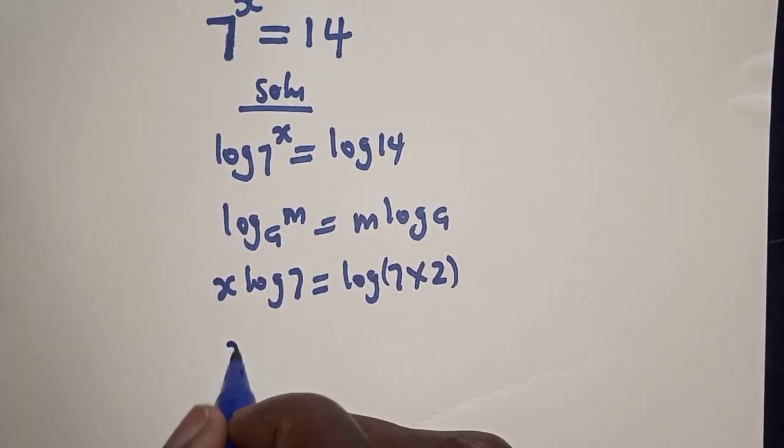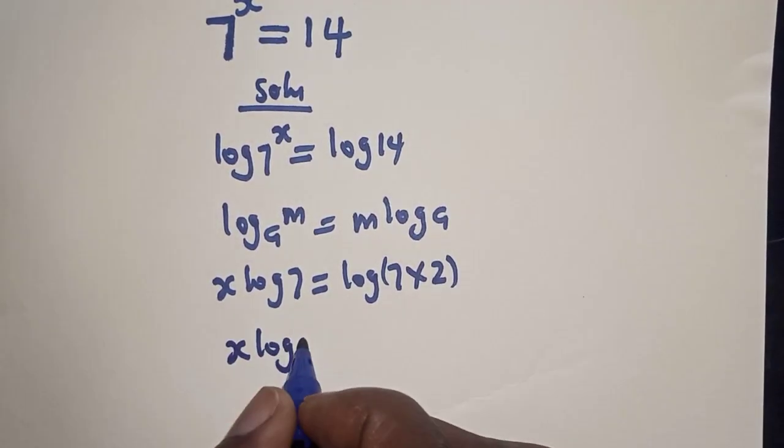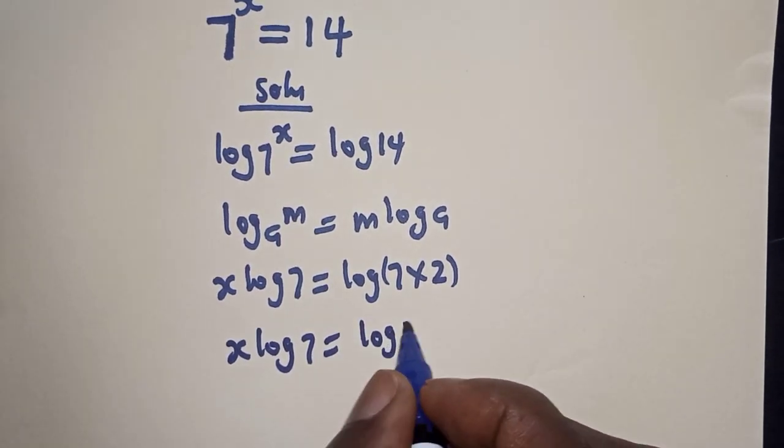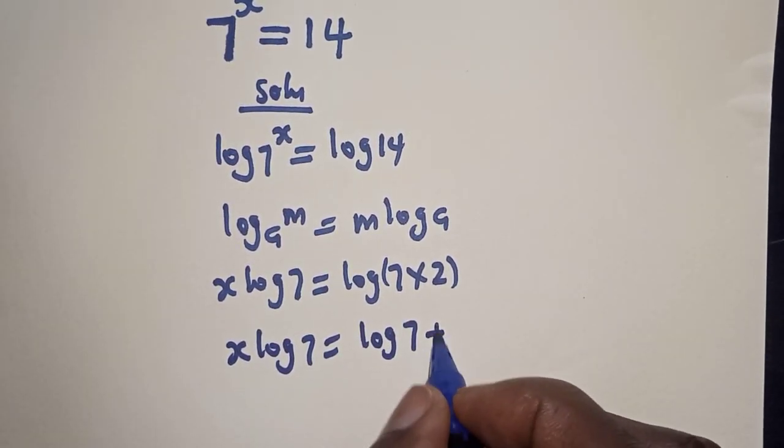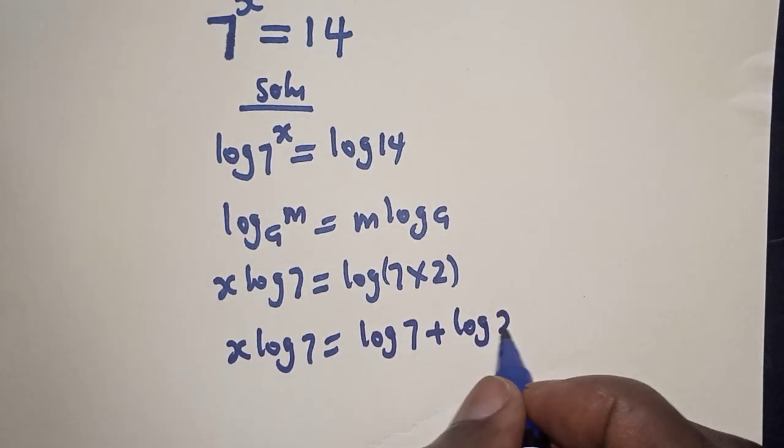Then, we have s log 7 is equal to log 7 plus log 2.